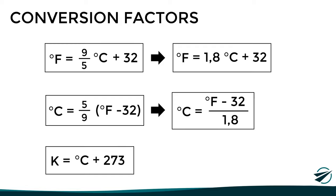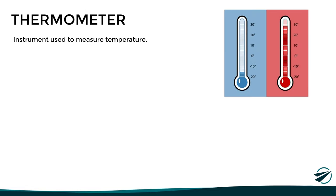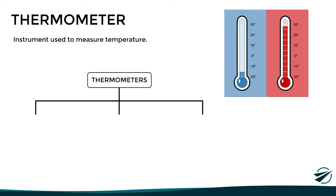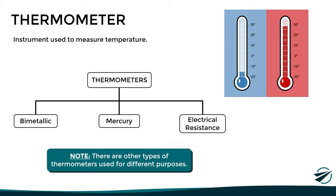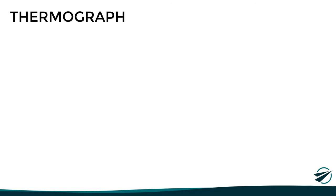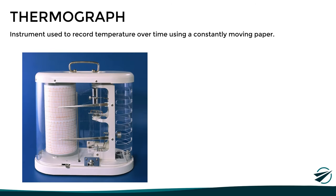Having seen the different temperature scales, let's move on to the instrument used to measure it, which is the thermometer. There are different types of thermometers depending on their principle of operation. The most commonly used in meteorology and aviation are the bimetallic, mercury, and electrical resistance thermometers. There are also other types used for different purposes, such as infrared and thermocouple thermometers. Apart from the thermometer, another instrument used in meteorology is the thermograph, which records temperature over time using a constantly moving paper.